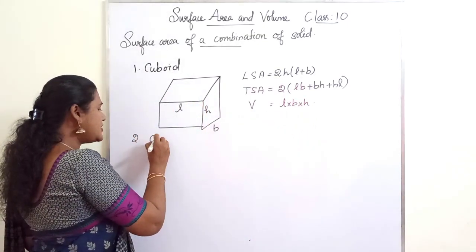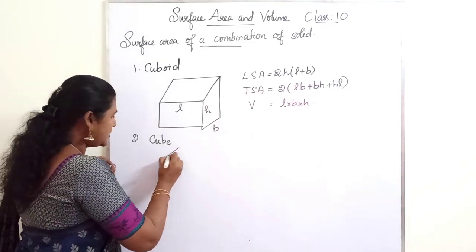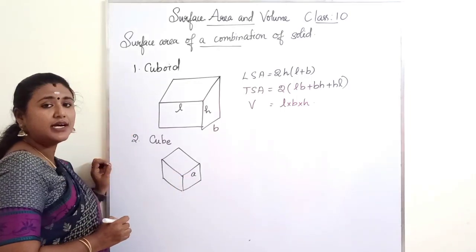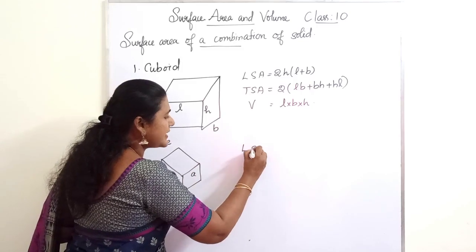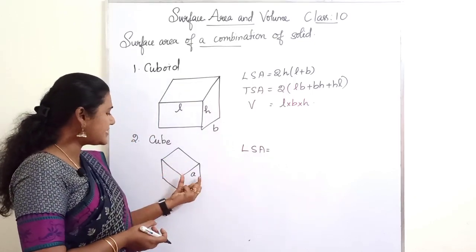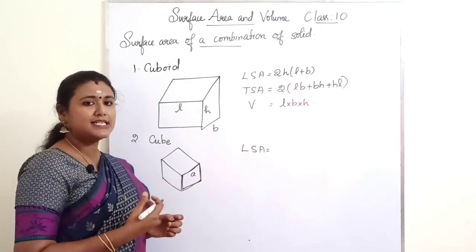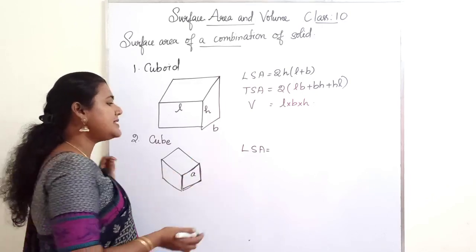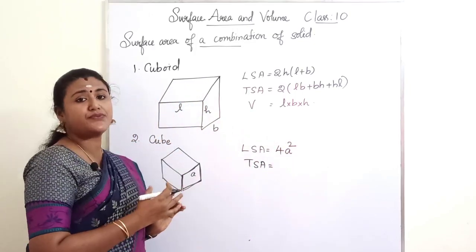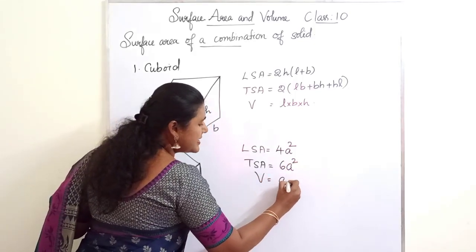Now we will go to the next shape: cube. So how to find the lateral surface area, TSA, and volume of a cube? Suppose the length of the side of a cube is A units. The lateral surface area is the sum of all the lateral faces. Each face of a cube is a square, so its area is A square, and LSA is 4A square. TSA is the sum of all 6 faces, so TSA is 6A square. The volume formula is A cube.